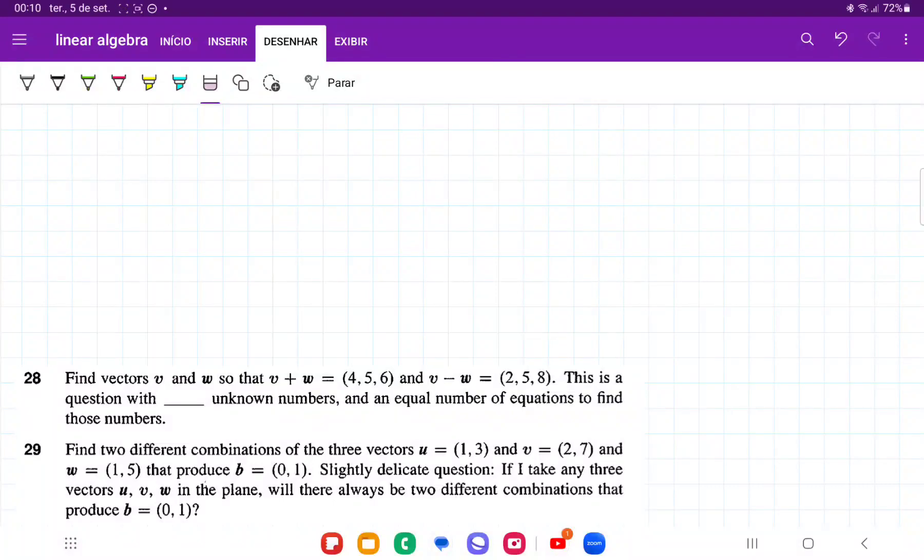For problem 28, we want to find vectors v and w so that v plus w equals (4, 5, 6) and v minus w equals (2, 5, 8).